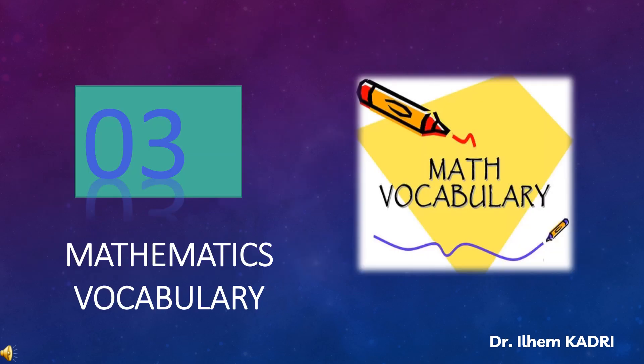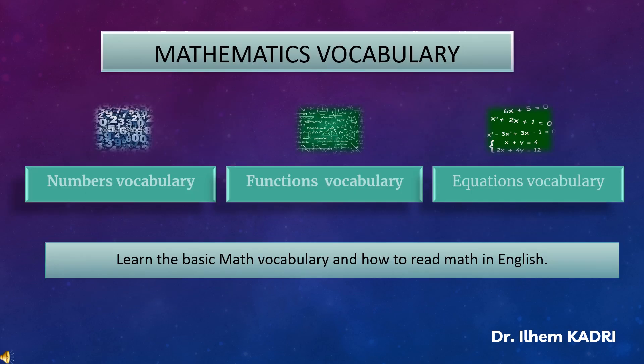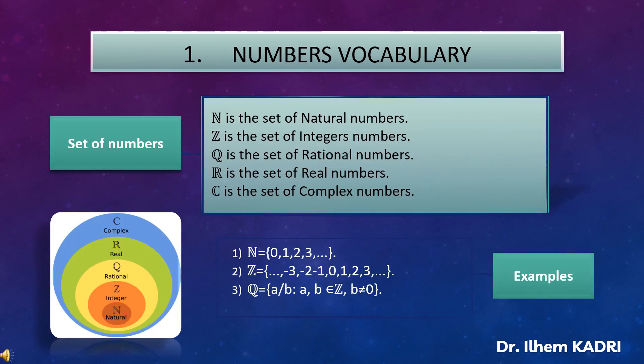In the third section, we learn the math vocabulary related to the courses Analysis and Algebra. For mathematics vocabulary, we have three parts: the first part is numbers vocabulary, the second part is functions vocabulary, and the third part is equations vocabulary. For the numbers vocabulary, we define the set of numbers with examples.